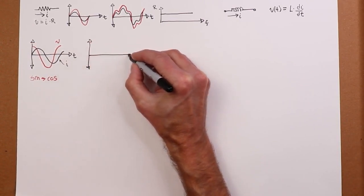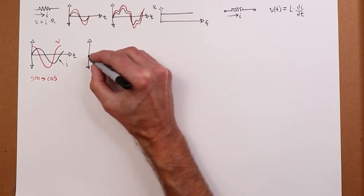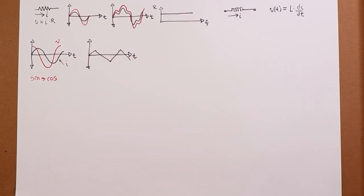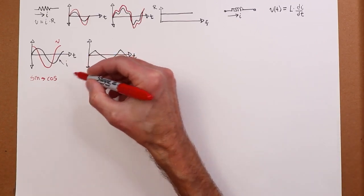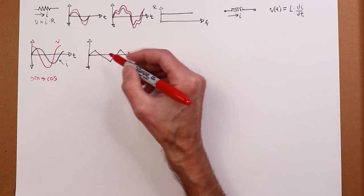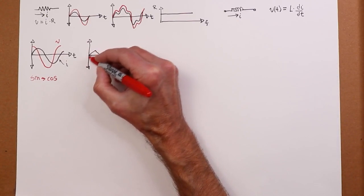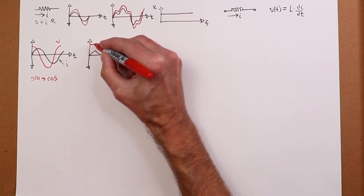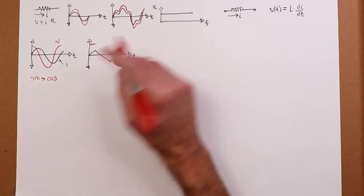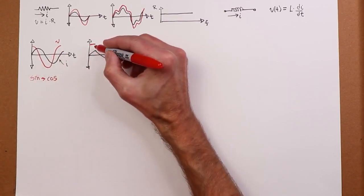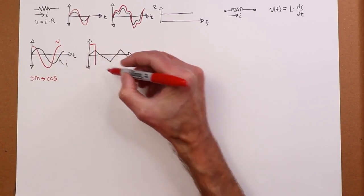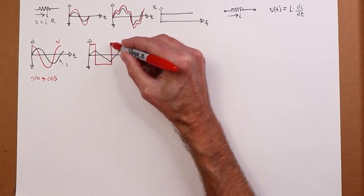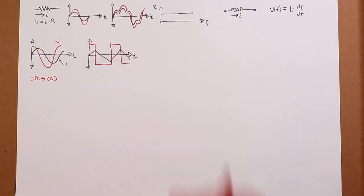But, if we had something a little bit more interesting, suppose we have like a triangle wave coming in here. Well, the derivative, the slope of this, in this region is just some positive value. It's a fixed rate of change. And over here, it's the same value, assuming this is a symmetrical wave. It's the same value, except it's negative. So, that comes down like this. And then it reverses and repeats.